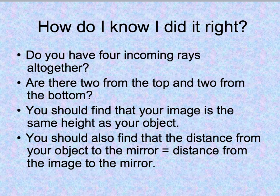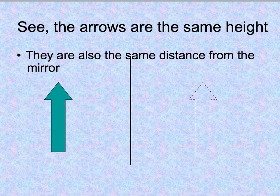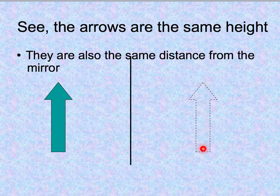How do you know you did it right? This is like a little check. Do you have four incoming rays? Are there two from the top and two from the bottom? You should find that your image is about the same size as your object, and the distance from the mirror to the object is the same as the distance from the mirror to the image. This distance here is about the same as this distance here. This height is about the same as that height.